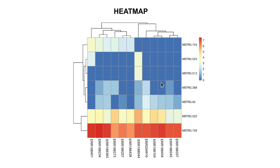These two groups show similar expression patterns within each cluster. You can go further using clustering approaches to get a deeper understanding of your data, and the same analysis can be applied to samples as well. Heat maps are a great way to interpret your gene expression data, and I encourage you to use them on your own data.